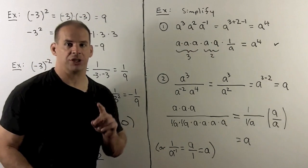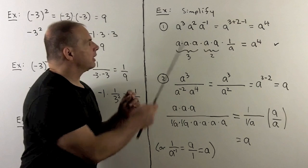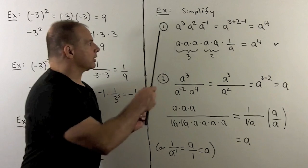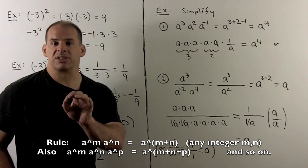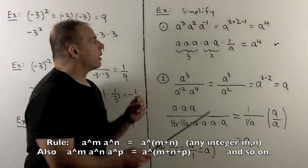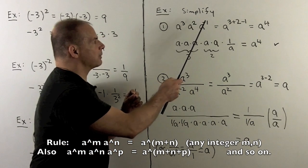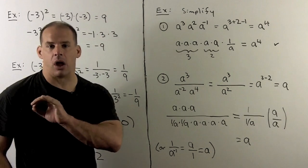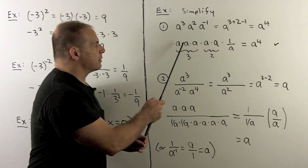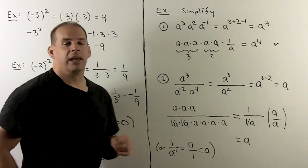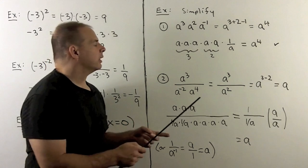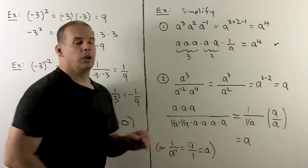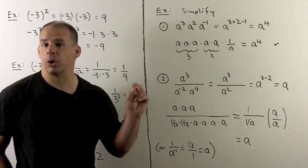Next, let's do some simplifications. Suppose we have a cubed times a squared times a to the minus 1. When we have like bases in a product, the rule is straightforward — we just take the sum of the exponents. So I have a raised to the 3 plus 2 plus minus 1, giving us a to the 4th power. To check: a cubed is a·a·a, a squared is a·a, and a to the minus 1 is 1 over a. The 1 over a cancels one of our a's, leaving four a's, so we get a to the 4th power.